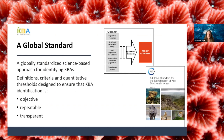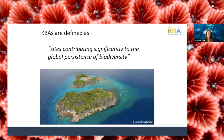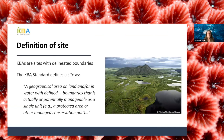The KBA standard provides a globally standardized, science-based approach for identifying KBAs. Like the IUCN Red List, this approach is based on definitions, criteria, and quantitative thresholds designed to ensure KBA identification is objective, repeatable, and transparent. KBAs are defined as sites contributing significantly to the global persistence of biodiversity. KBAs are sites with delineated boundaries — the KBA standard defines a site as a geographical area with defined boundaries that is actually or potentially manageable as a single unit. There is no minimum or maximum size for a KBA, but the manageability requirement places a context-dependent constraint on maximum size.